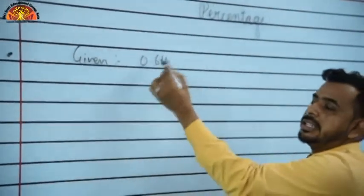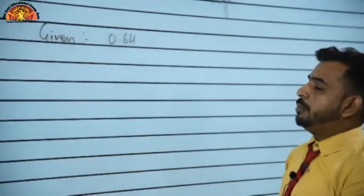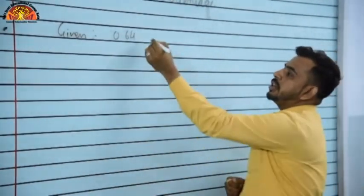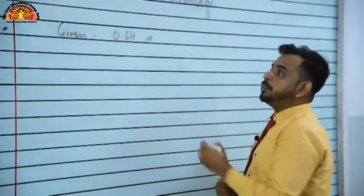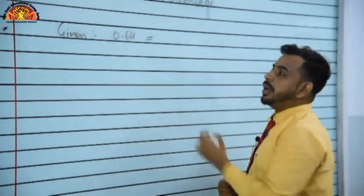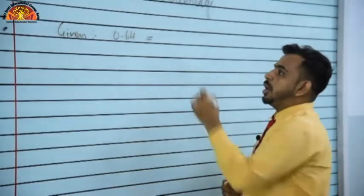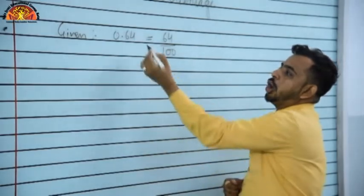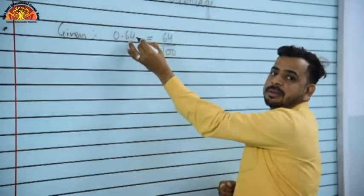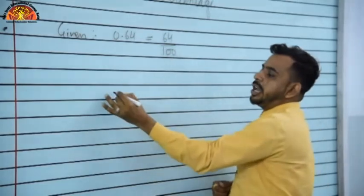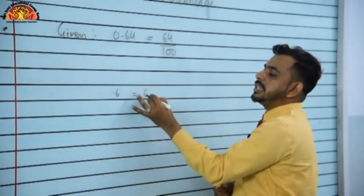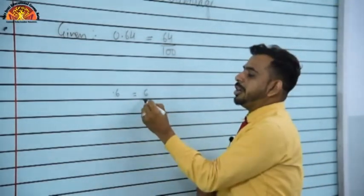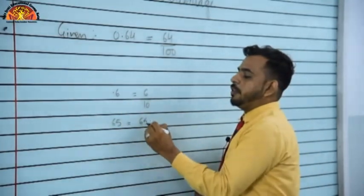If the decimal has 2 digits after the decimal point, we write it as a fraction with denominator 100. For example, 0.64 = 64/100. If there are 3 digits, denominator is 1000. If 0.6, then it is 6/10. So 0.65 = 65/100.